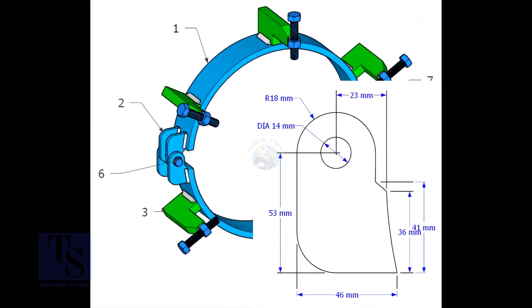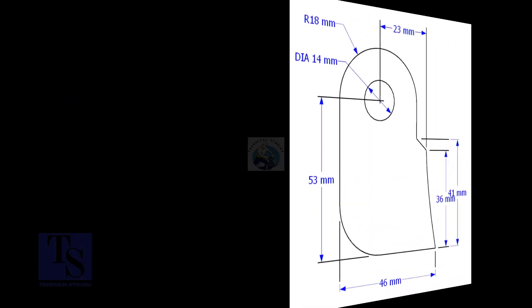Cut item number two from 8 or 10 millimeters thick plate. The quantity is four numbers.